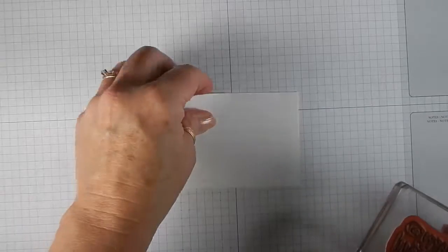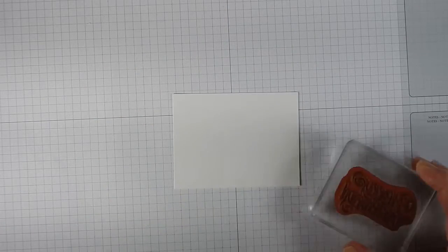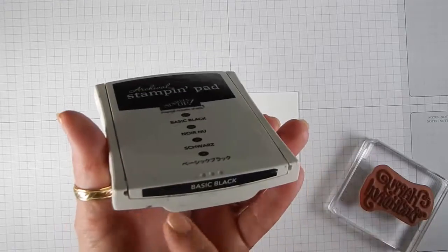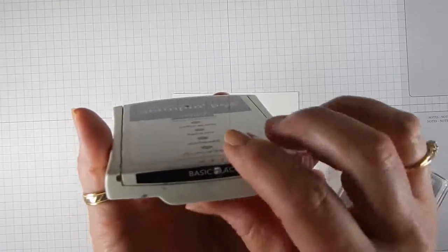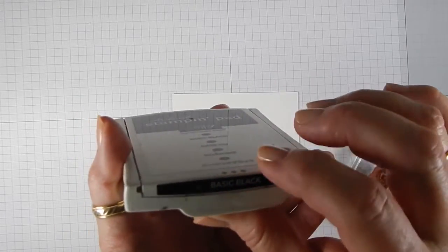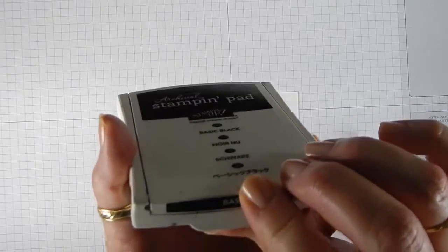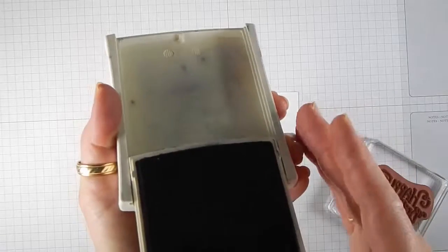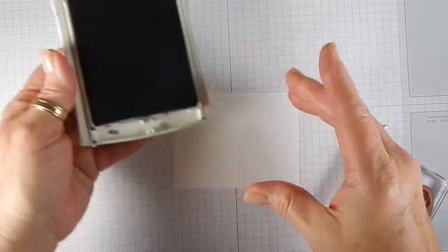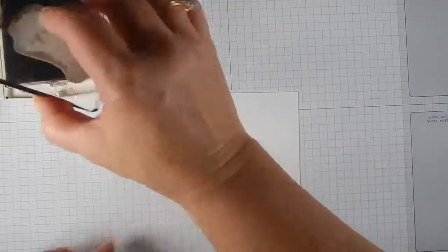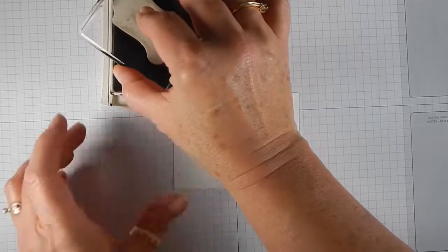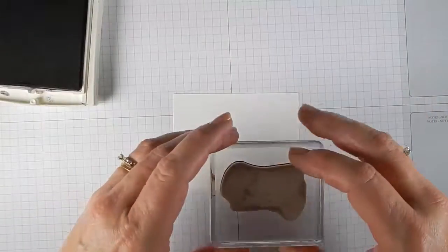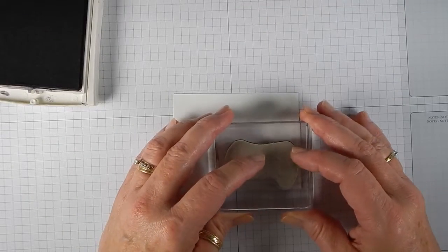So we'll take our piece of Whisper White and we're going to use our basic black ink. Now these ink pads are made so that you can stick your thumb underneath this little tab and you're going to push, flip it over and it locks into place. So, ink up our stamp and we're going to stamp it.